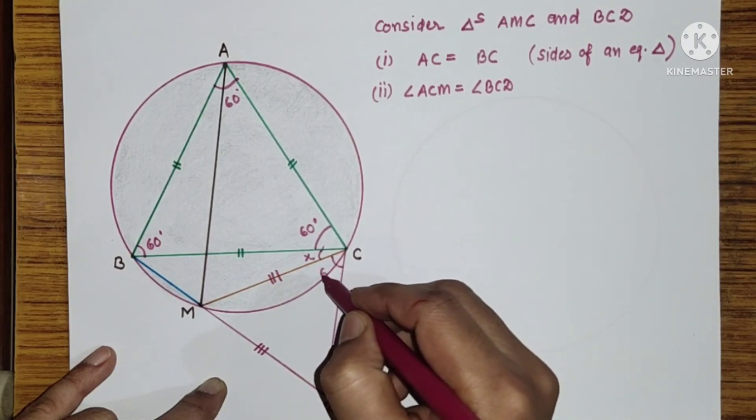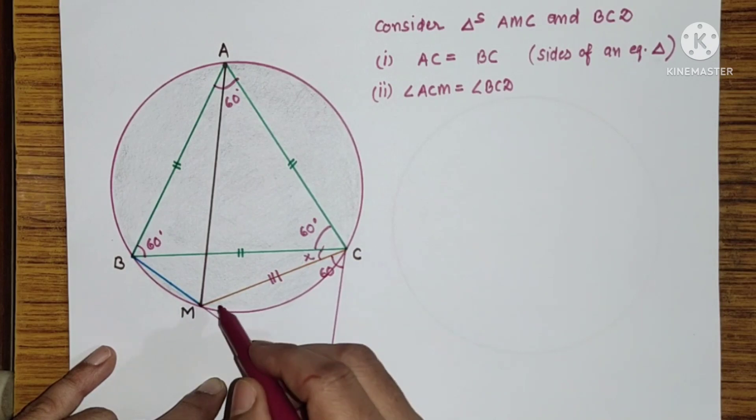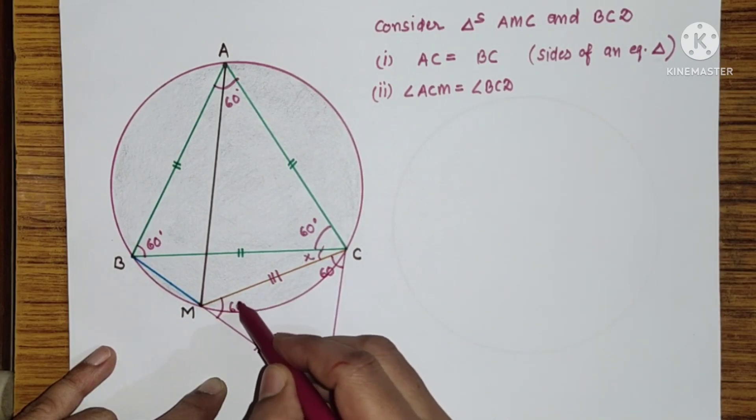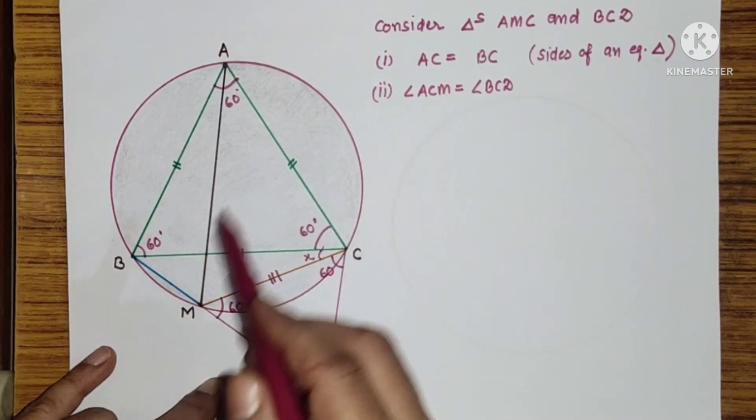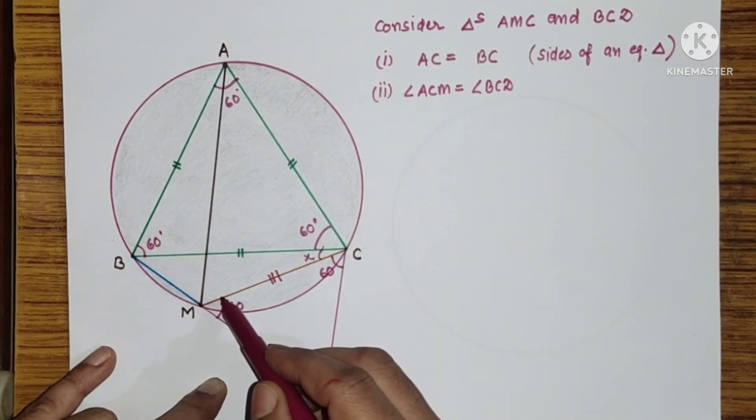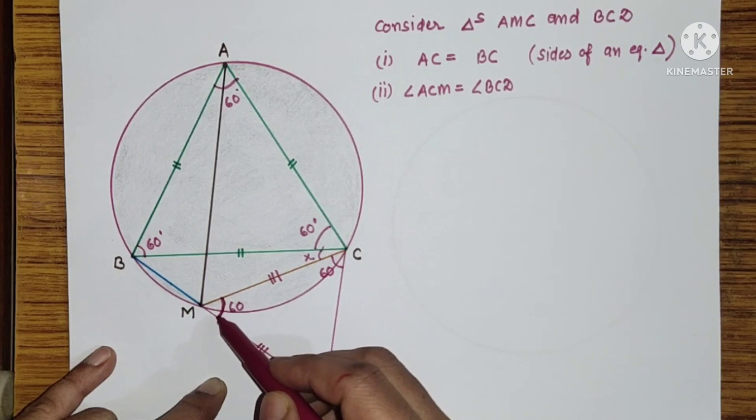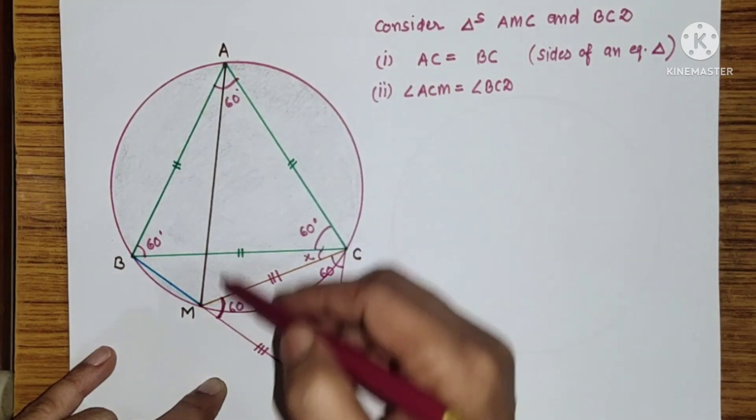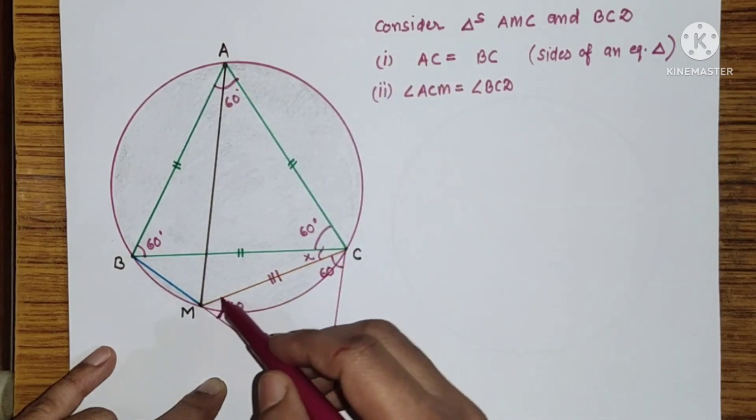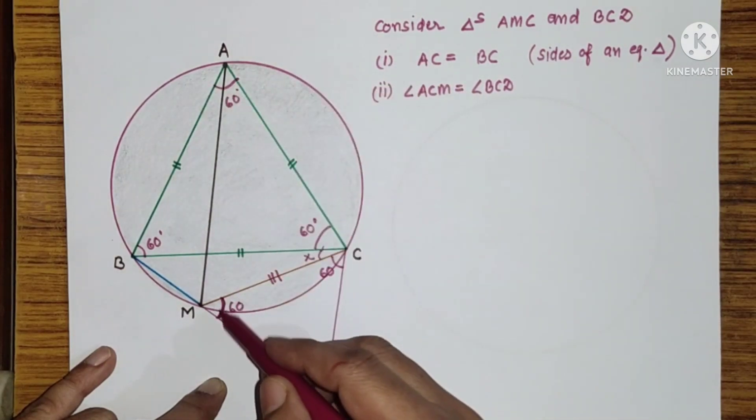Why this is 60? Because this angle is 60. Since ABMC is a cyclic quadrilateral and this is exterior, this will be equal to the opposite angle of cyclic quadrilateral. Since this is 60, therefore this will be 60.